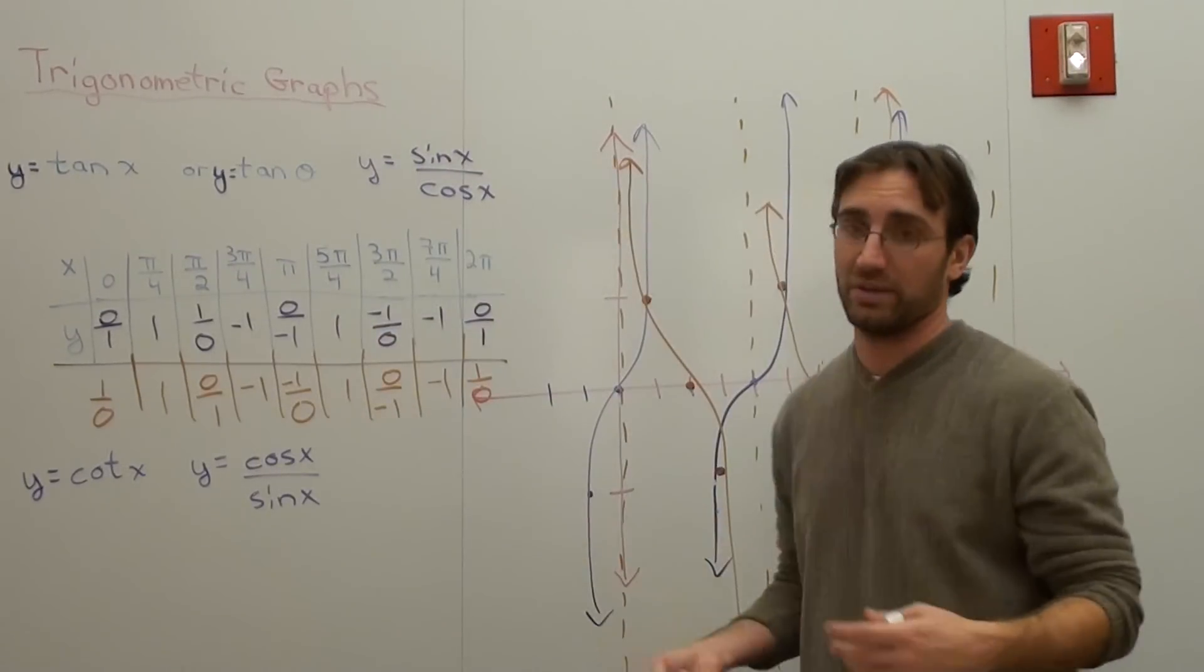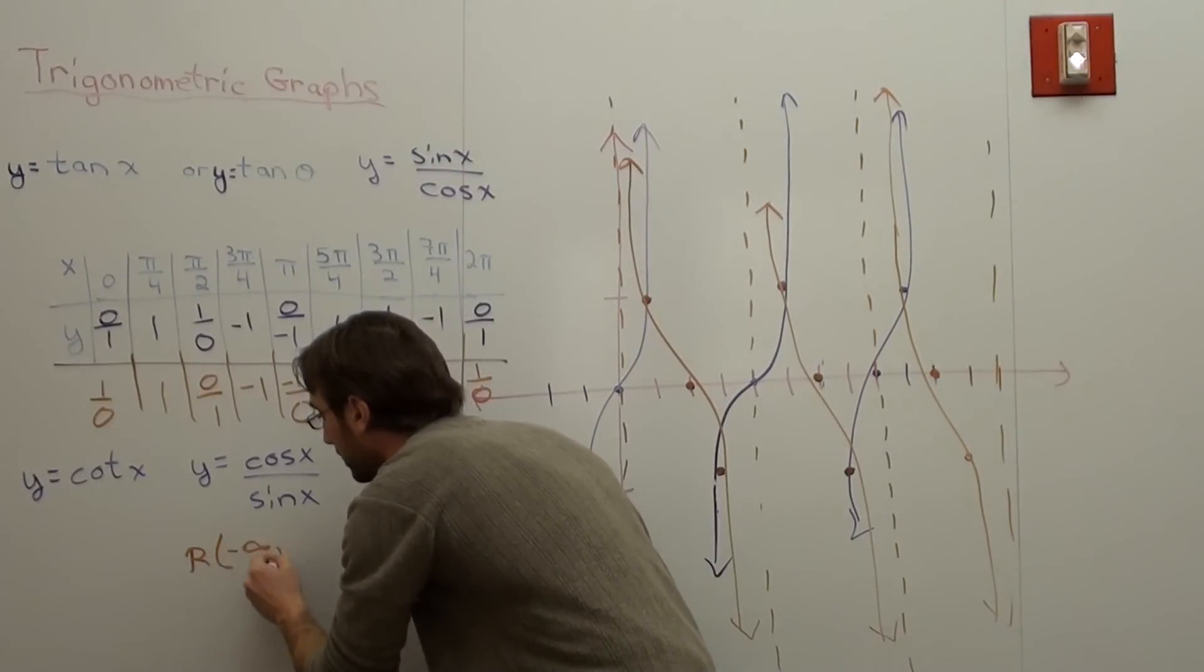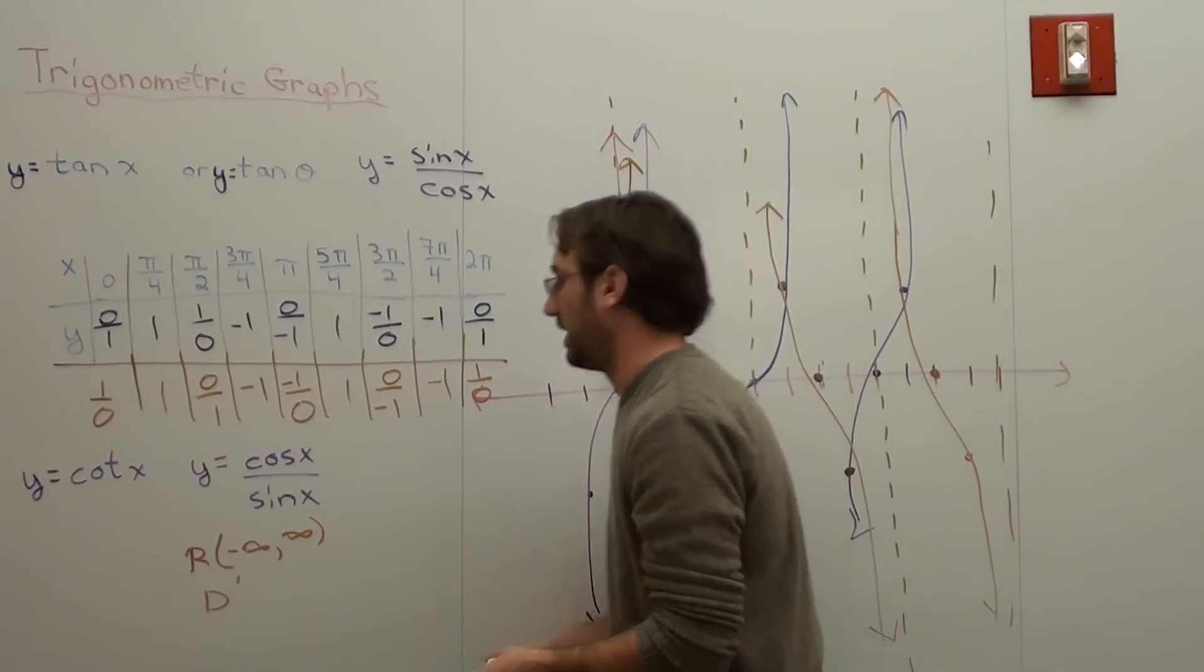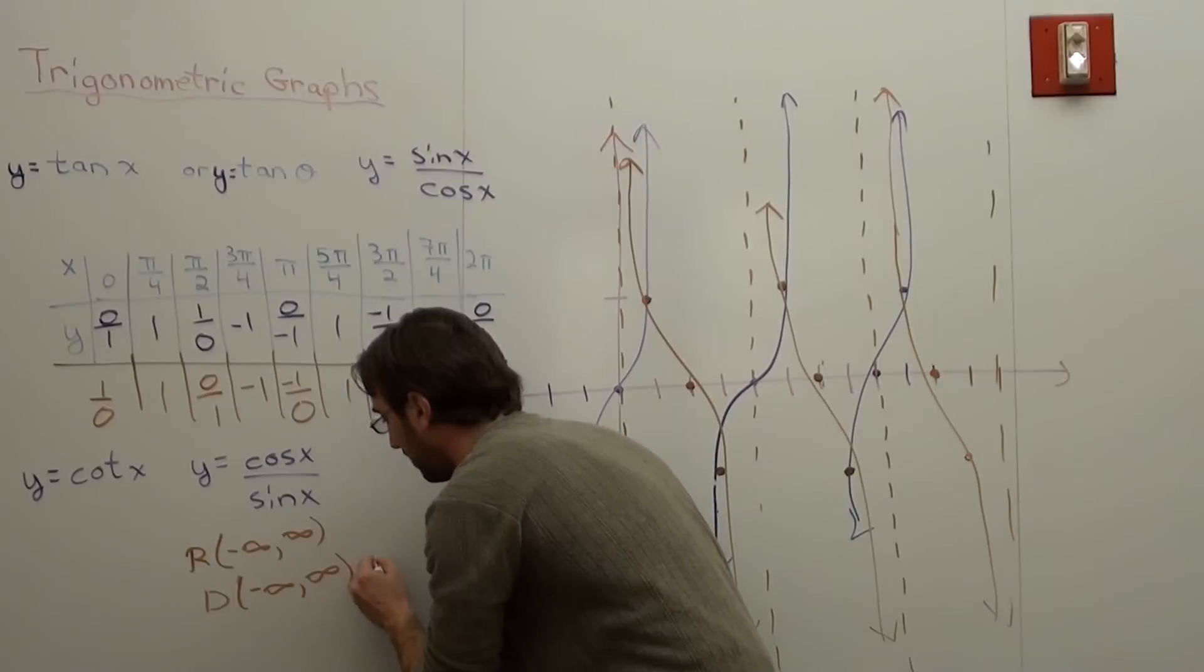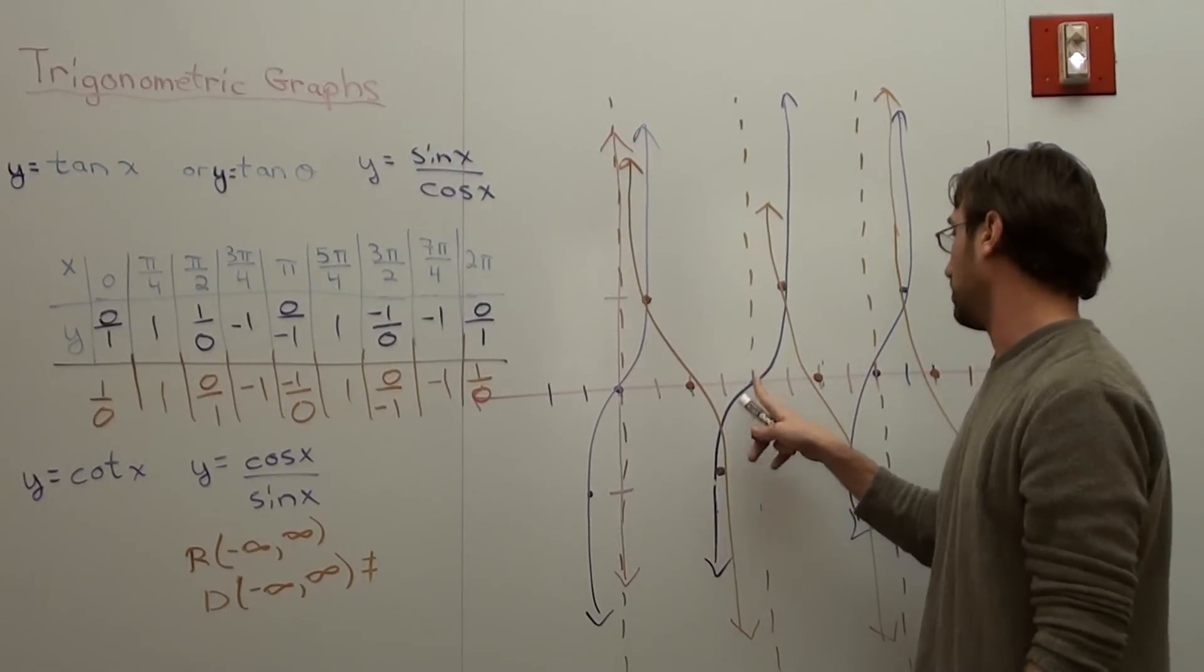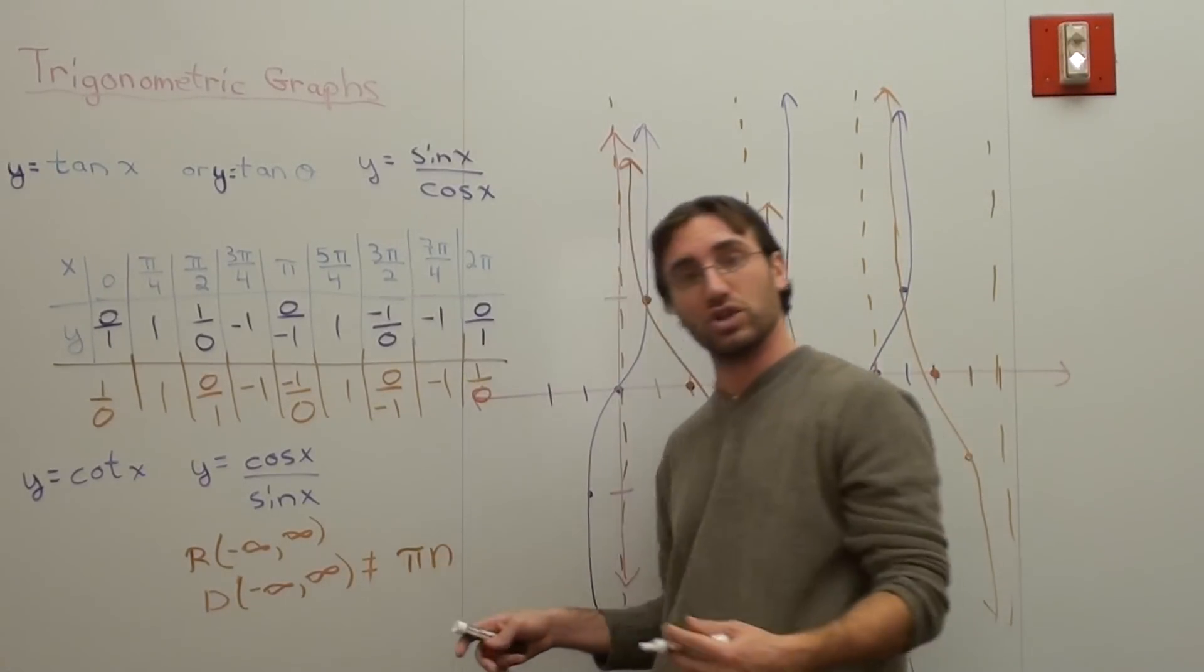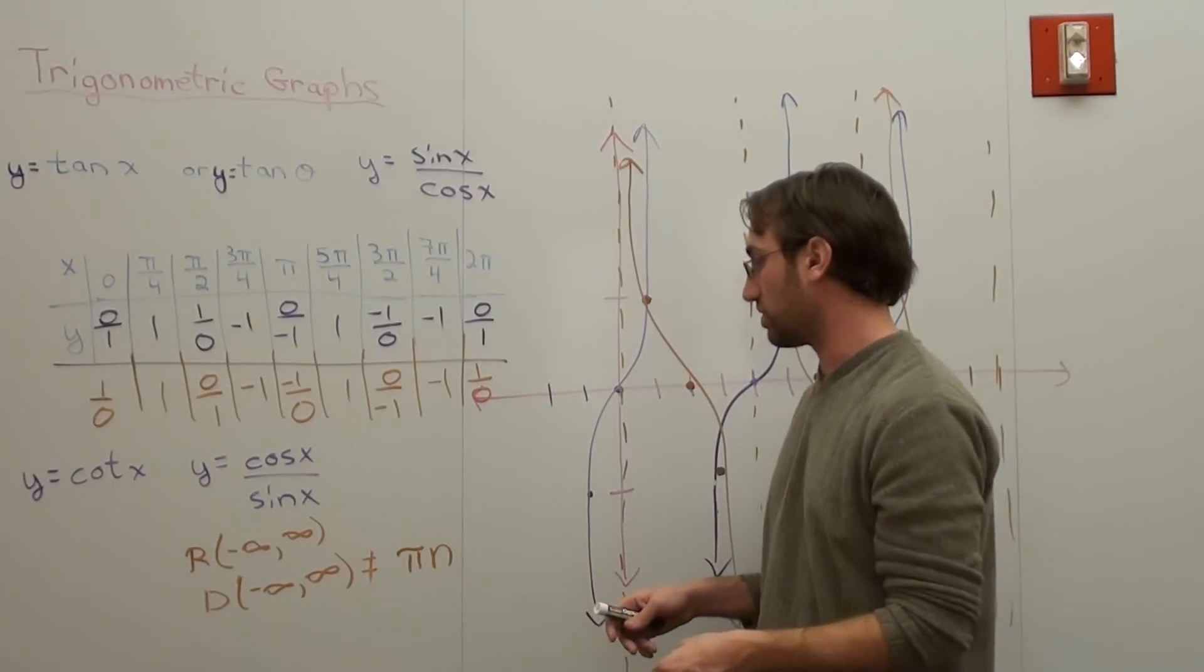The range is the same as the tangent. It's from negative infinity to infinity. The domain is pretty difficult, actually. It's all, well, I just say it's all values excluding. That's how I like writing it. Some people might not like the way that I write that. And basically what it is is it doesn't include 0, it doesn't include pi, it doesn't include 2 pi, it doesn't include 3 pi. So basically what it is is pi times n, where n is an integer. You know, negative 1, negative 2, 0, 1, 2, 3, 4, 5, just only those types of numbers.